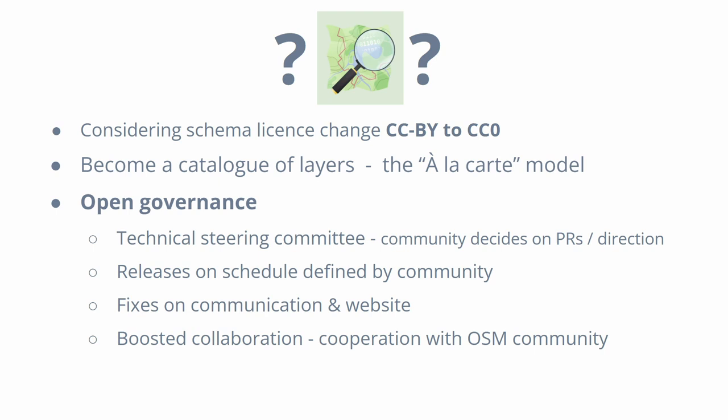Thanks to Tom and Peter and many other wonderful folks at MapTiler, they just announced — about ten minutes ago — that they are considering changing the schema to CC0. I'm very excited about that. It should become a catalog of layers where everyone can say, I want really detailed points of interest because my barber shop is critical on that map. There should be open governance where people will be able to decide as a community: this is how we want to progress, this is the tooling we need, these are the schema changes we allow or don't allow, this is the flexibility we want to provide to users. There's a lot of wonderful things that MapTiler is putting on the table.